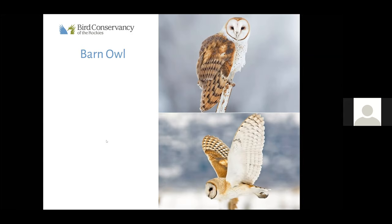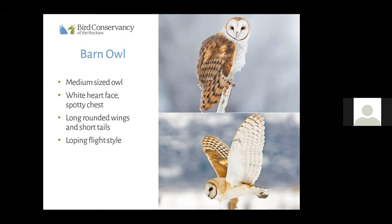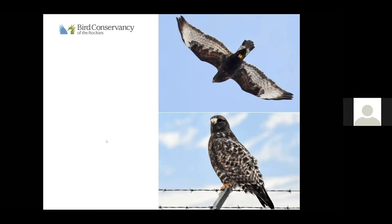It's a barn owl! Some characteristics that might have led you there: it's a medium-sized owl with a beautiful white heart-shaped face, a spotty or speckled chest, brown cinnamon color on its back, long rounded wings, short tail, and that loping buoyant flight style. Tyler says he saw one fly over his house a couple of weeks ago in the late afternoon — fantastic if you can find one in the wild!